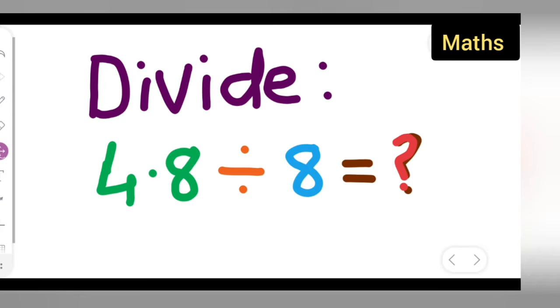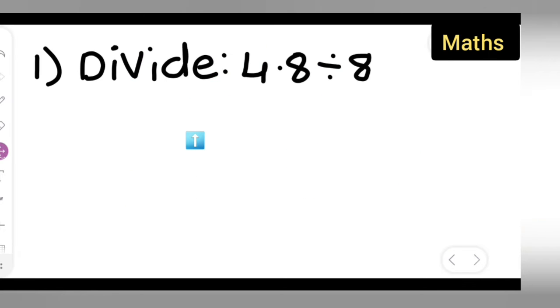Basically here the number has a decimal point and many of you will find it difficult to divide, especially when you have a decimal point right in between the number.